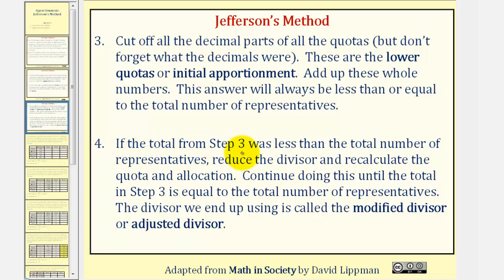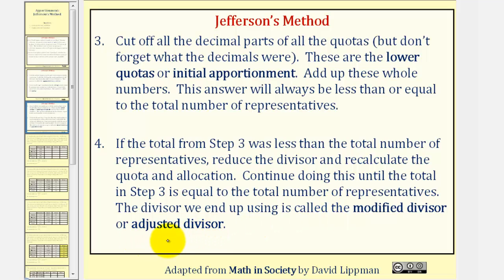Step four says: if the total from step three is less than the total number of representatives, we reduce the divisor and recalculate the quota and initial allocation. So if we have leftover representatives, we modify the divisor rather than using the decimal parts of the quotas as we do in Hamilton's method. We continue doing this until the total equals the total number of representatives. The divisor we end up using is called the modified divisor or adjusted divisor.